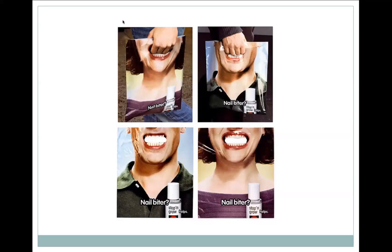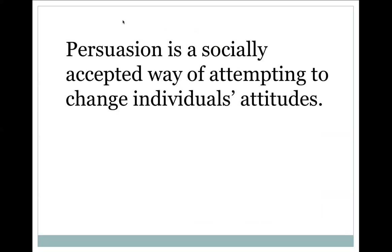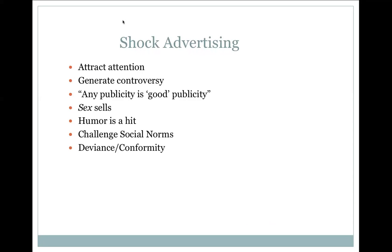There's some interesting advertising — visually persuasive ads, like a shopping bag. And there's a visually persuasive ad campaign — a public service announcement for drunk driving. We have to understand that persuasion is a socially accepted way of attempting to change our attitudes and beliefs. The chapter also talks about shock advertising. The main points are that they attract attention, generate controversy, and use the idea that any publicity is good publicity. Sex sells, humor is a hit, they challenge the norms — deviance versus conformity.